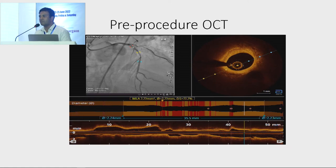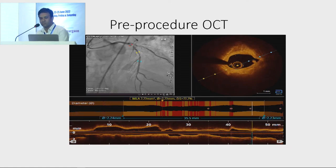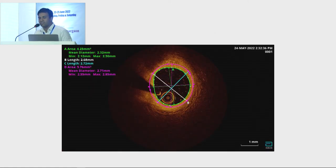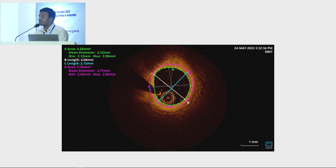So we could identify two landing zones: the distal landing zone and the proximal landing zone. This is how we measured the distal reference diameter — it was 2.7 mm. The proximal reference diameter was around 2.82 mm.